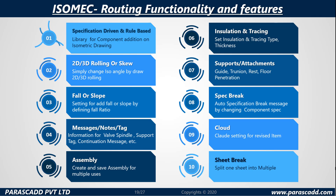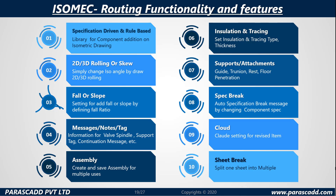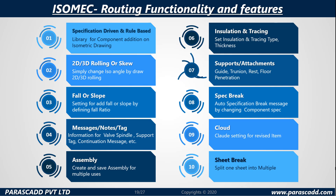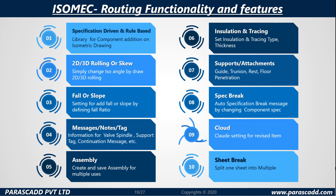Isomec routing functionality and features include specification-driven and rule-based routing, 2D or 3D rolling or skew, fall or slope, messages, notes, tags, assembly, installation and tracing, supports or attachments, spec break, cloud, and sheet break.